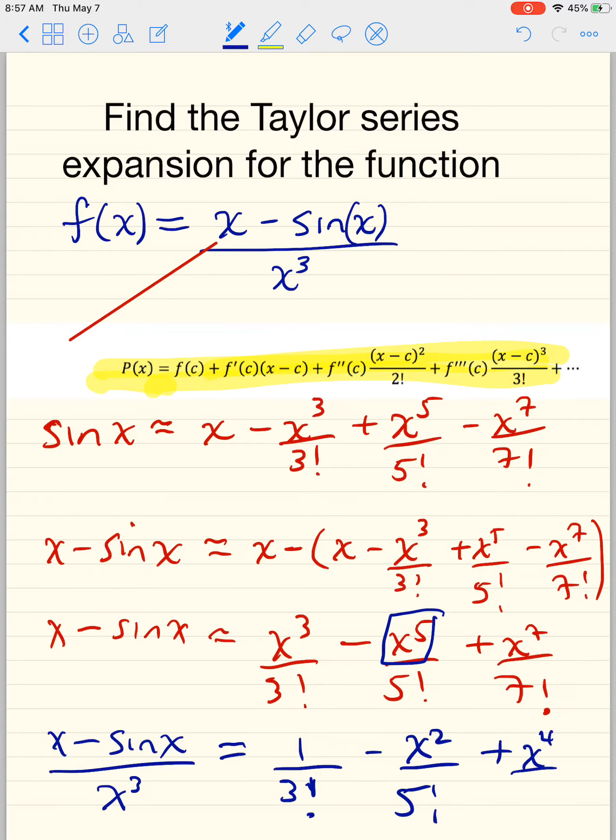And the question might say 'a fourth degree Taylor polynomial,' and that's how we do this. It's very simple. You start with what you know and then you work with the things around it.